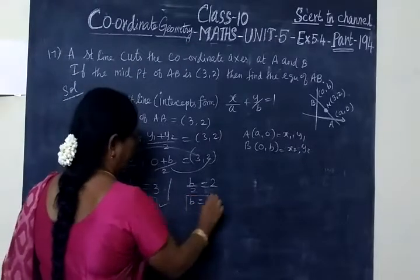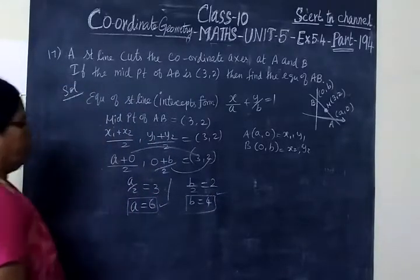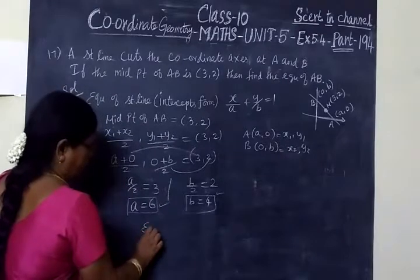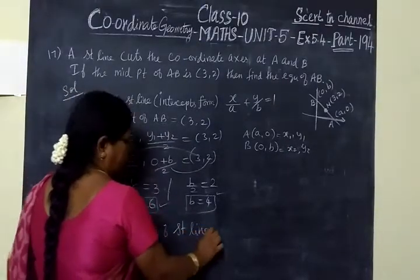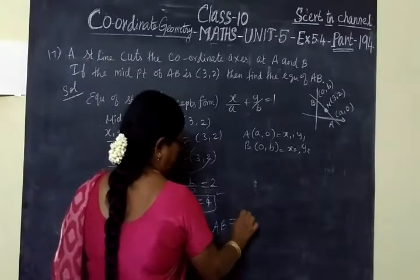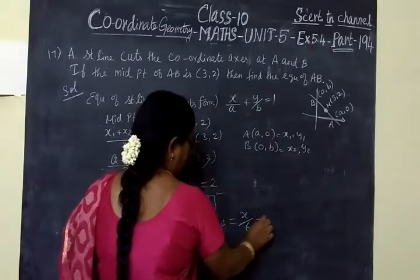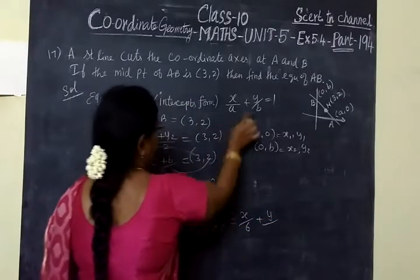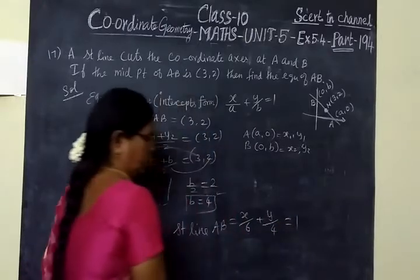So we know A value and B value. Now we find the equation. Equation of straight line AB: X/A plus Y/B equal to 1. X/6 plus Y/4 equal to 1.